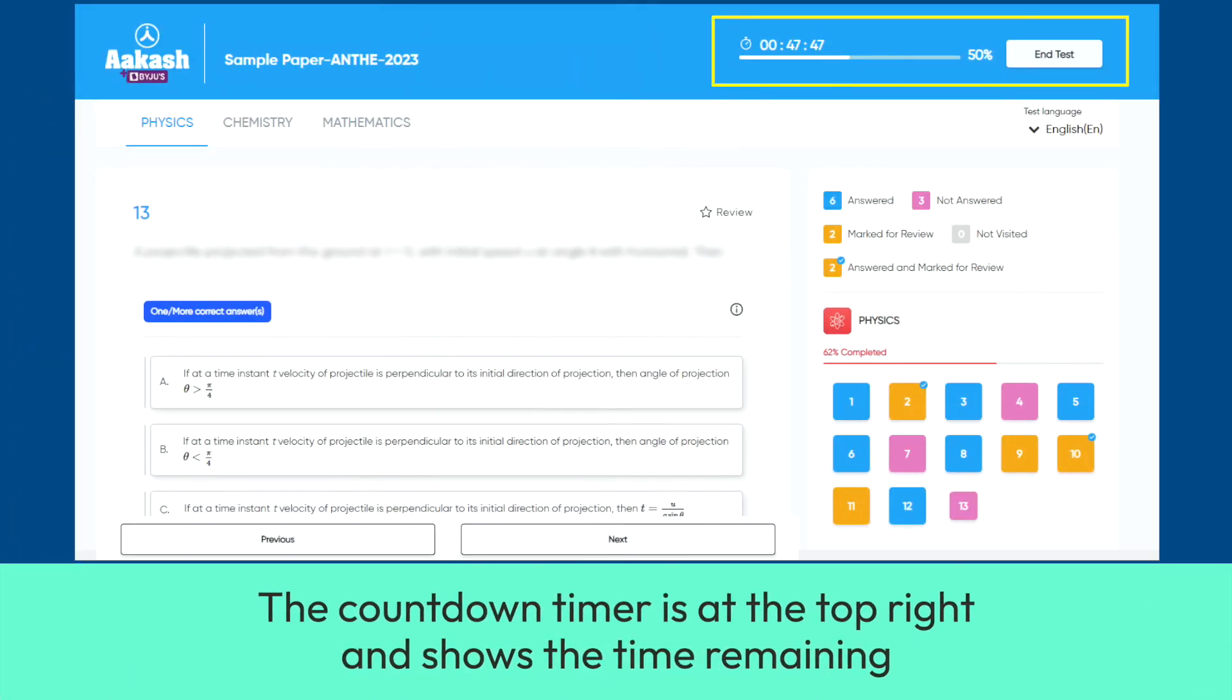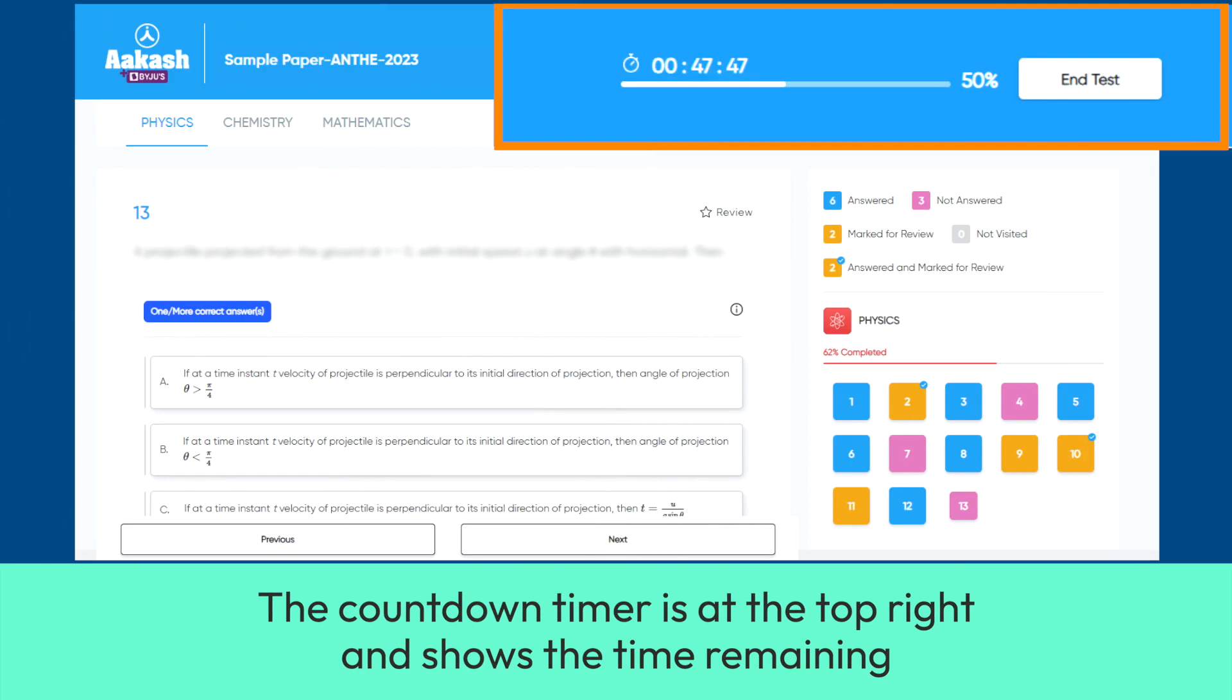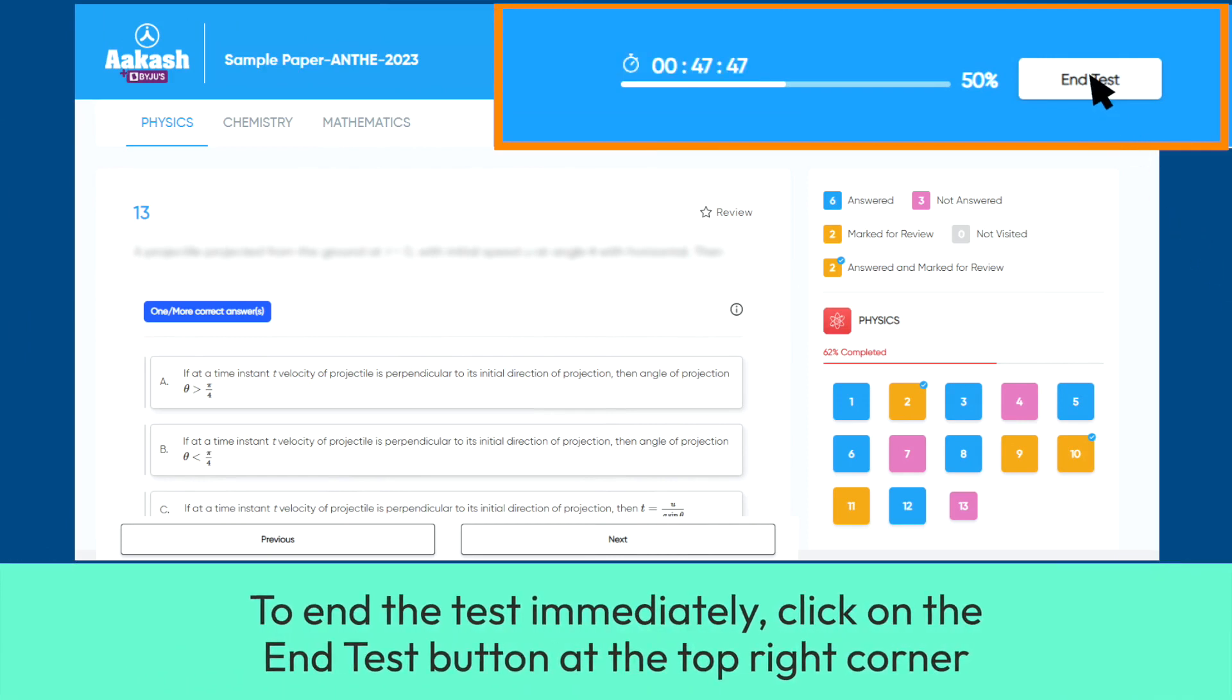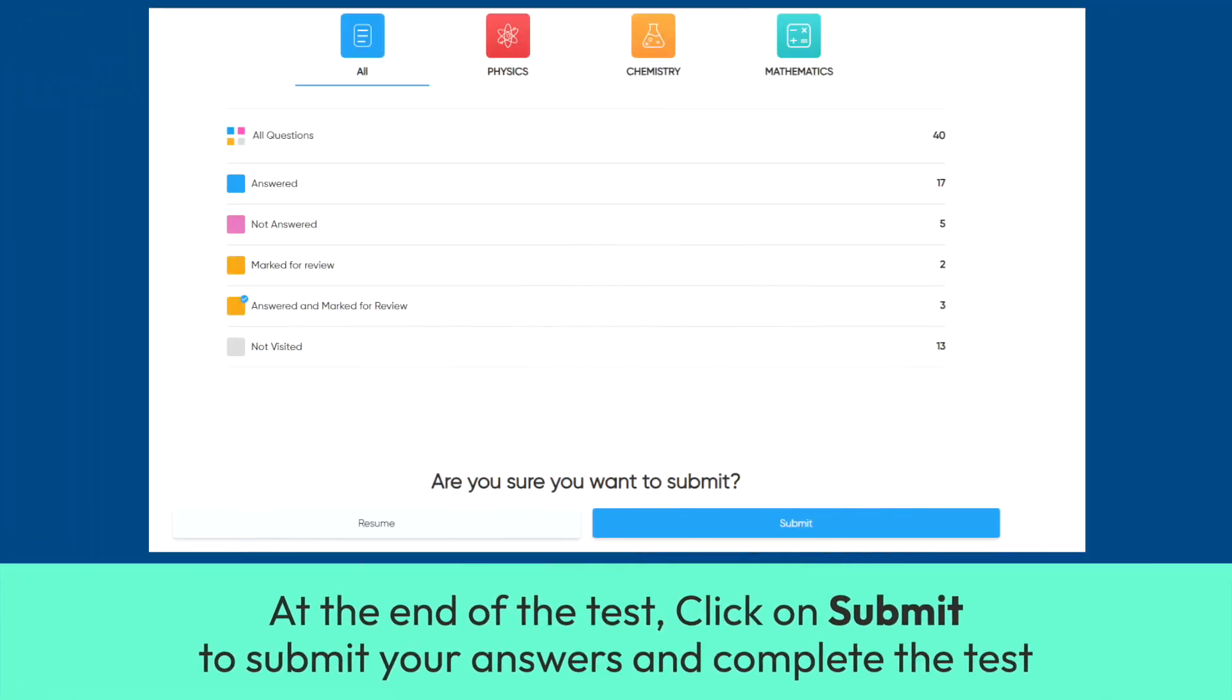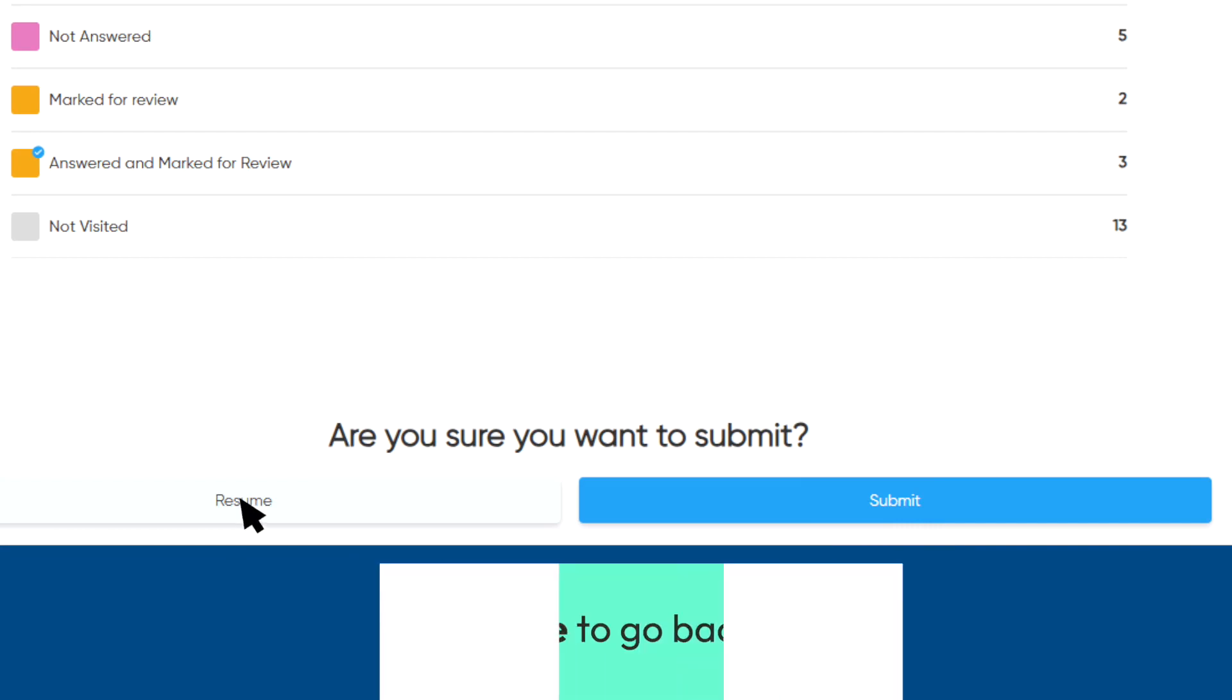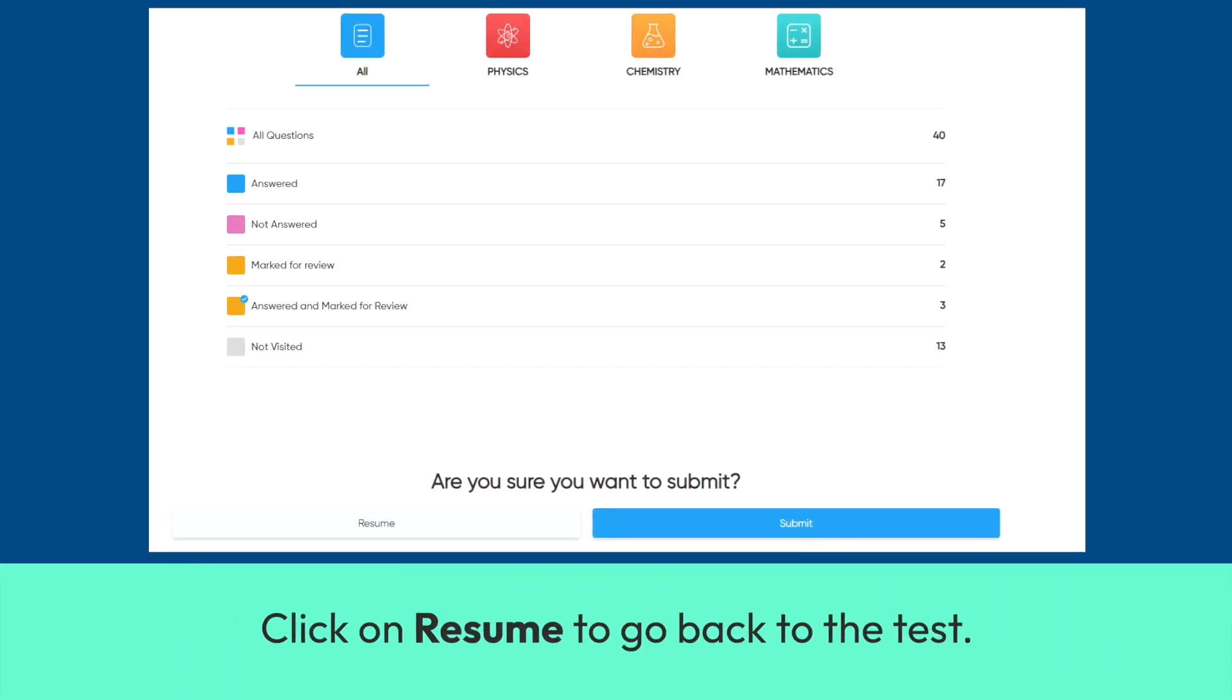The countdown timer is at the top right and shows the time remaining. To end the test immediately, click on the End Test button at the top right corner. At the end of the test, click on Submit to submit your answers and complete the test. Click on Resume to go back to the test.